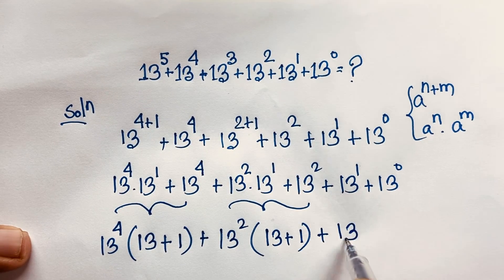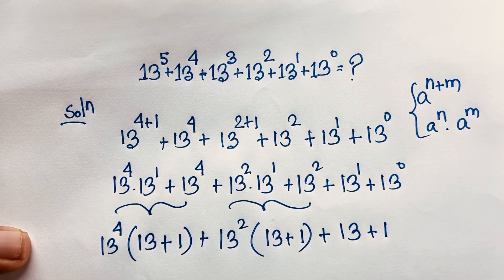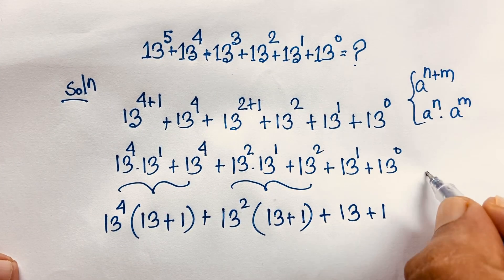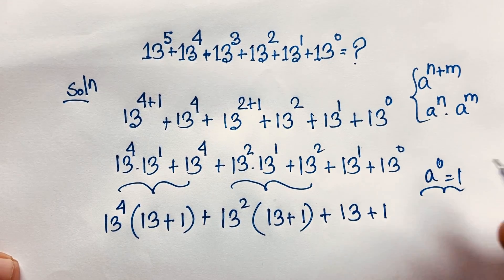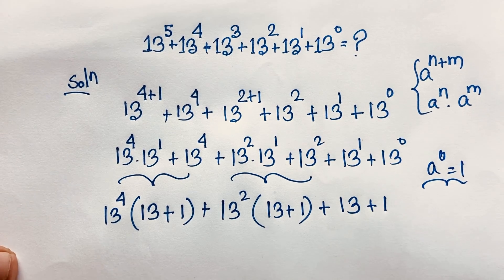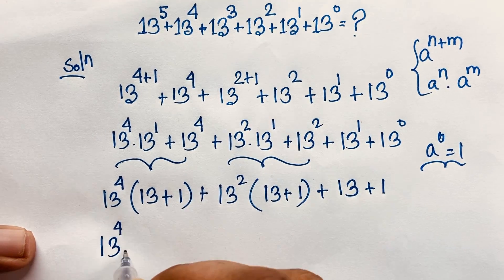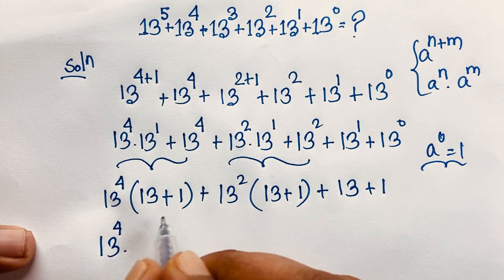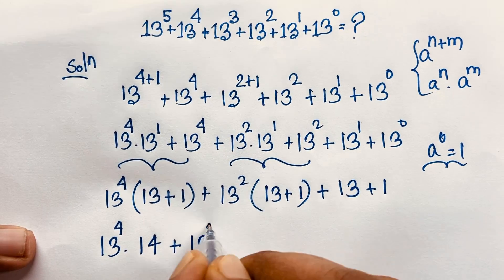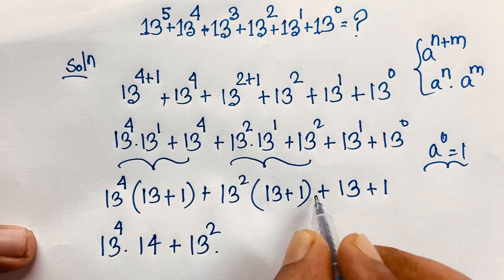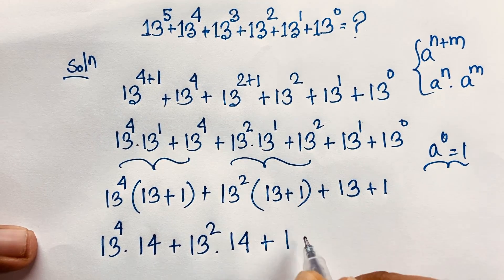And this is 13, and 13 power 0 which is 1. So 13 power 0 is equal to 1. Now, this is 13 power 4 times 13 plus 1, it will be 14. And this is 13 power 2, and 13 plus 1 is 14, and 13 plus 1 is 14.